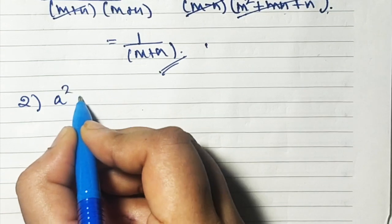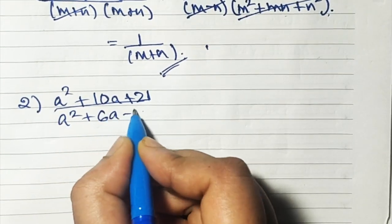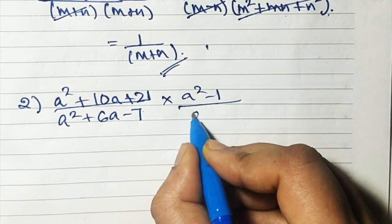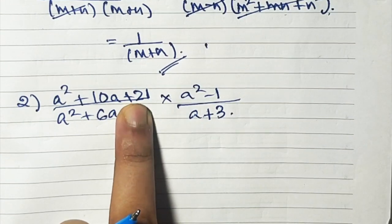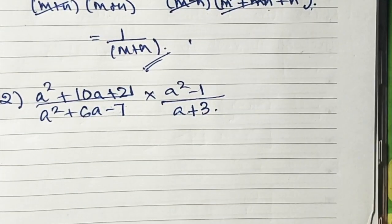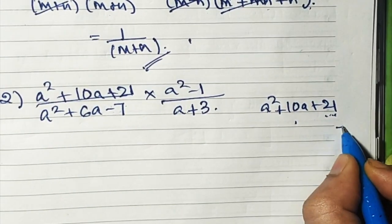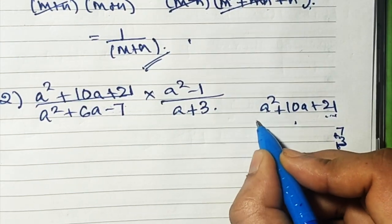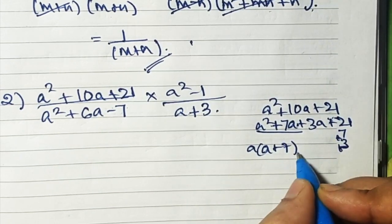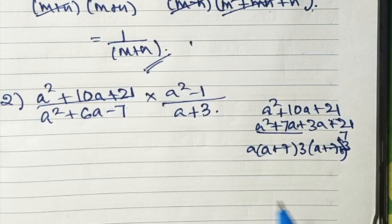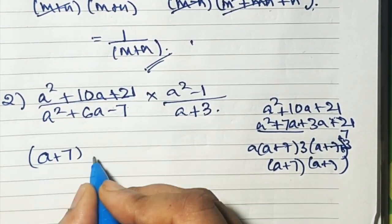Sum number 2: (a² + 10a + 21)/(a² + 6a - 7) × (a² - 1)/(a + 3). For a² + 10a + 21, we need to find factors. Break 21 to get 10: 3 and 7 work, both positive. So we get (a + 7)(a + 3).